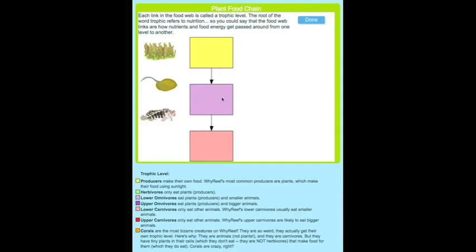Each box is color-coded according to its trophic level. The key at the bottom explains what each color means. For example, the yellow box is for a producer, the light purple box is for a lower omnivore, and the pink box is for a lower carnivore.